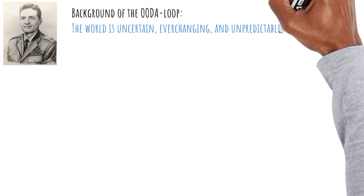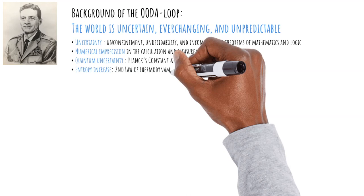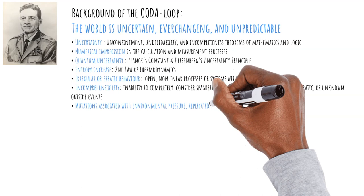Before we get to the actual OODA loop, it is important to give some background on John Boyd's thinking. His starting point is that we need a way to survive in a world that is uncertain, ever-changing, and unpredictable. We have to make our decisions in an environment that is unconfined. Sometimes decisions cannot be made, and we have incompleteness in mathematics and logic.